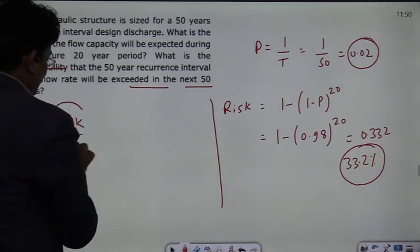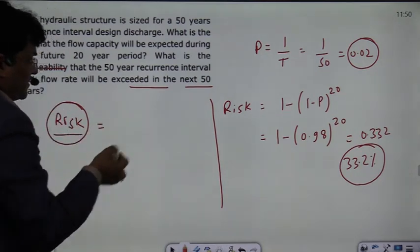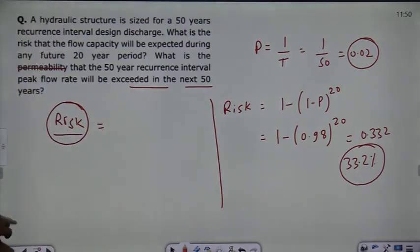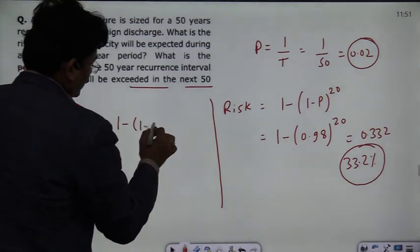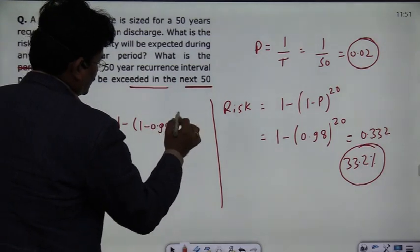That in the next 50 years, if it will happen, what does it mean? That the structure will fail. So you have to comment on that. So 1 minus 0.98 raised to the power 50.